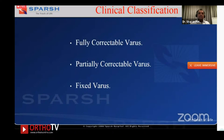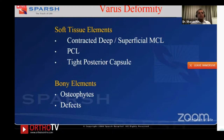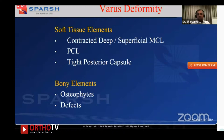With experience, I find myself doing less and less tissue release, as most deformities are correctable once you address the soft tissue elements. Contracted structures include the deep and superficial MCL. PCL contractures are notable when varus is associated with flexion deformity. Sacrificing the PCL gives much more effective balancing control. Tight posterior capsule also contributes to varus with flexion deformities. Never forget the bony elements: osteophytes and bone defects.